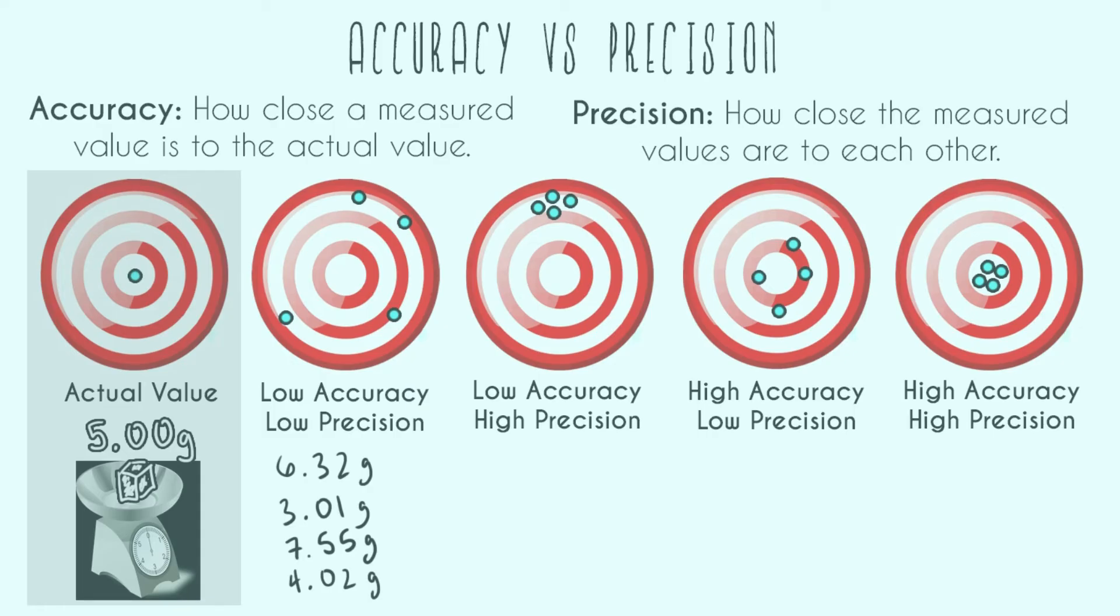So none of these were that close to five grams. And they also weren't close to each other. So they were very low accuracy and they were very low precision. If this is what you got when you weighed this cube five times, you should really get your scale fixed or throw it away or check your technique, right? Something is very wrong if these are your results.